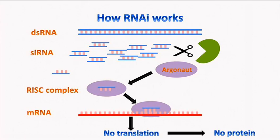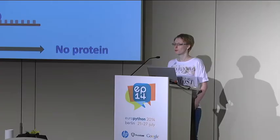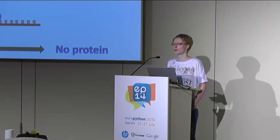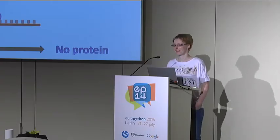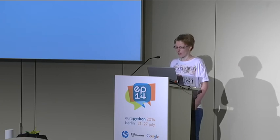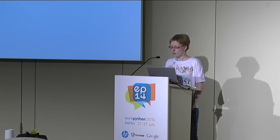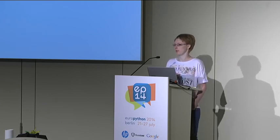We also use it. We have developed a testing system where we can use this tool — it's very efficient. That's why we call it reverse genetics: if you don't know what a gene does, you switch off gene by gene and look at what happens. But there are two problems with it.